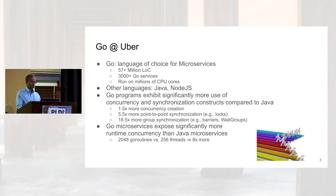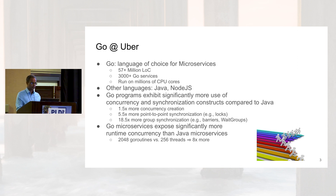Go is the language of choice for implementing microservices at Uber. We have over 57 million lines of code in a single repository at Uber, which hosts about 3,000 Go services, and they run on millions of CPU cores. There are also other languages we use for implementing microservices, such as Java and Node.js. Java is the second most common after Go.